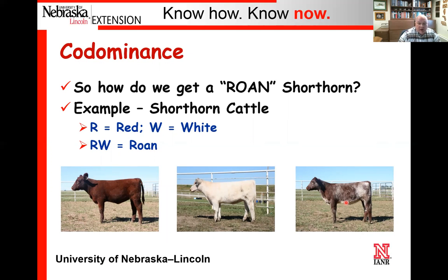Incomplete dominance is different: if an animal had the red gene and the white gene and those two traits were incompletely dominant with one another, the offspring would actually end up being pink—neither gene completely expressed, resulting in an intermediate color. That's incomplete dominance. Codominance means both are fully expressed but intermixed, as we see in shorthorn cattle.